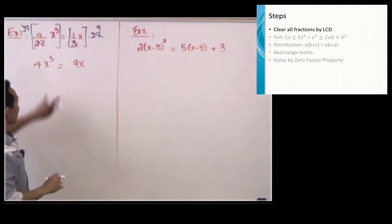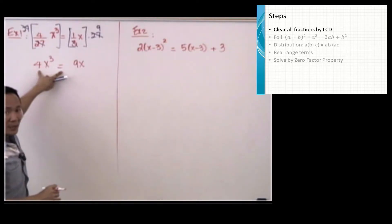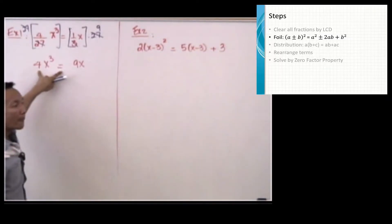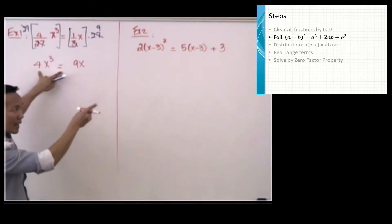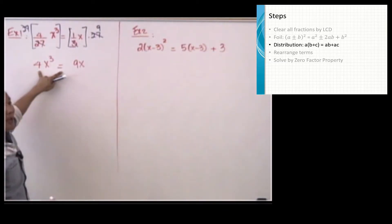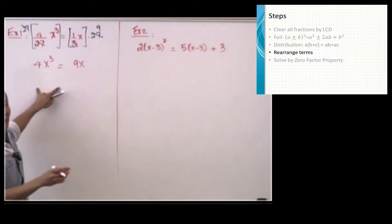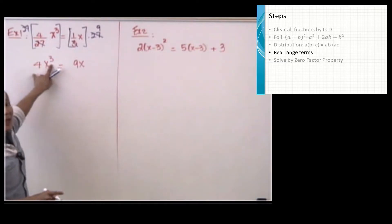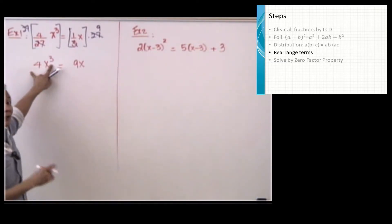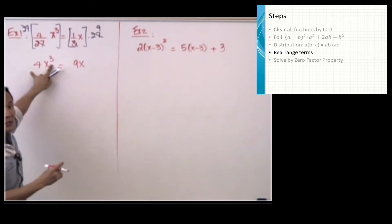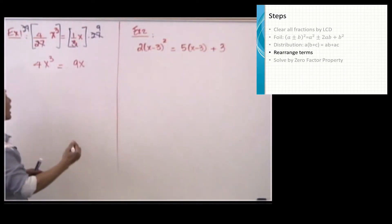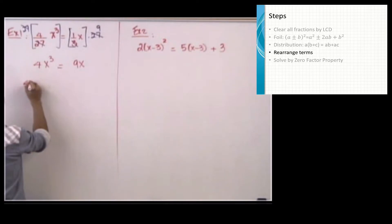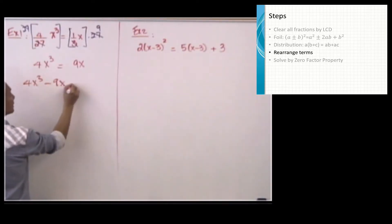3 goes into 27 nine times, and 27 divides out to one. The left side gives me 4x to the third power, and the right side gives me 9x. I check for FOILing — we don't have any. I check for distributive property — we don't have any. Then I rearrange terms: the highest power is three and the leading coefficient is four, which is positive. I subtract 9x from both sides to get 4x cubed minus 9x equals zero.